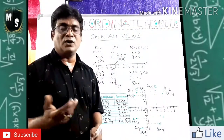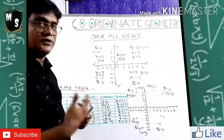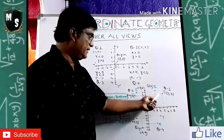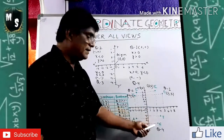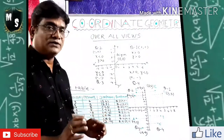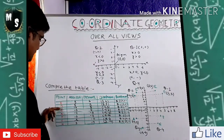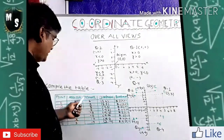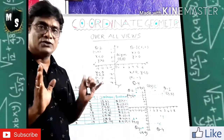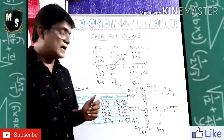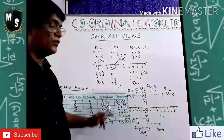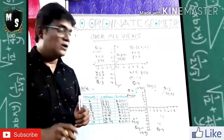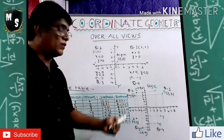Now I will show how to complete a table. Some points are given on the Cartesian plane — E, D, C, U, A, T, I, N — in various quadrants. You have to complete a table giving the point name, the abscissa (X-axis distance from origin), the ordinate (Y-axis distance from origin), the coordinate pair (written as X, Y in brackets), and the quadrant it belongs to.